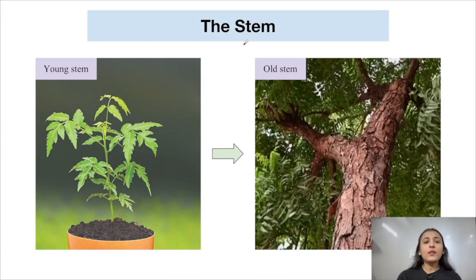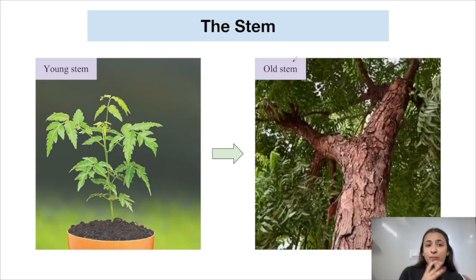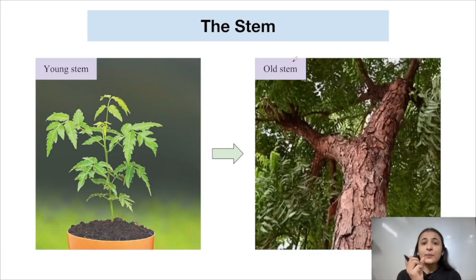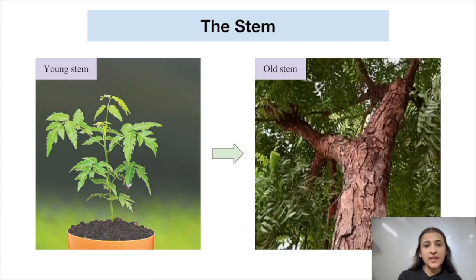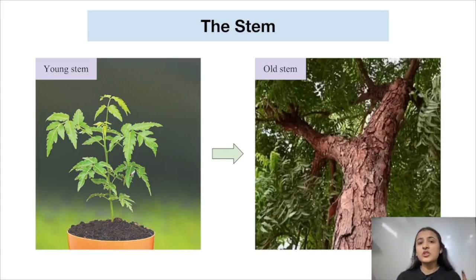When a stem is young, it looks green in colour. As the plant matures over time, the stem becomes thick and brown in appearance. If the plant is going to become a tree, it develops a thick bark. Young stems are very soft and tender and can easily be bent.